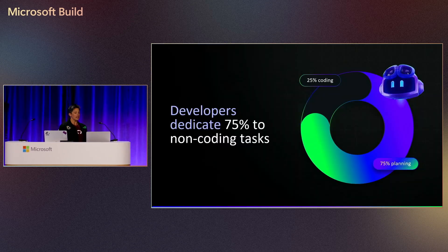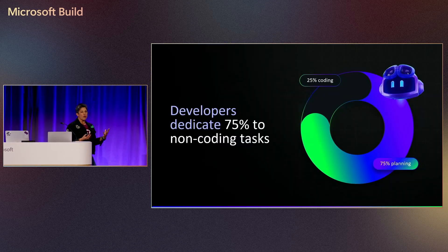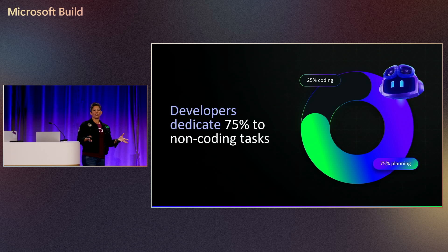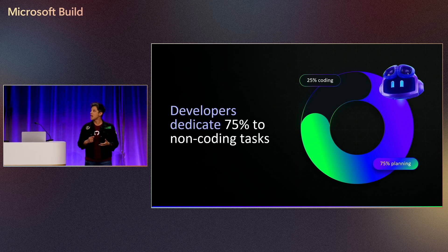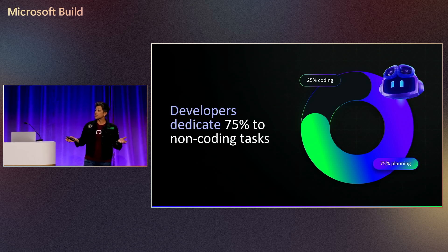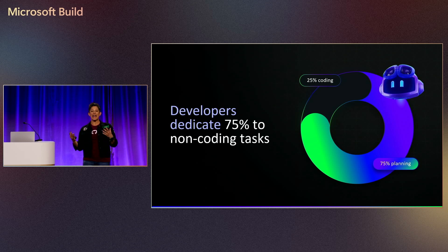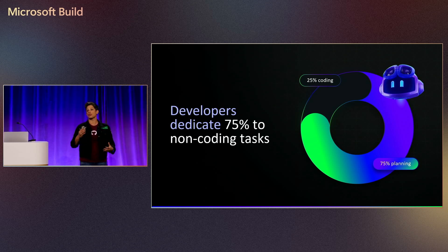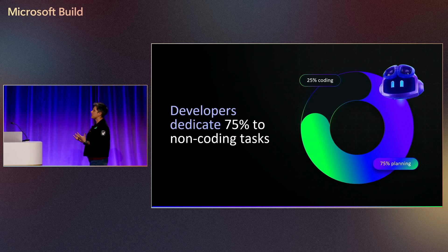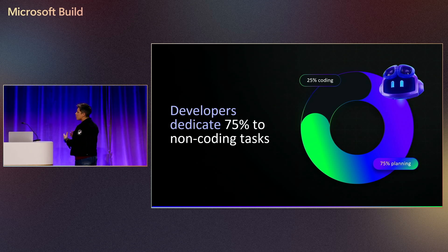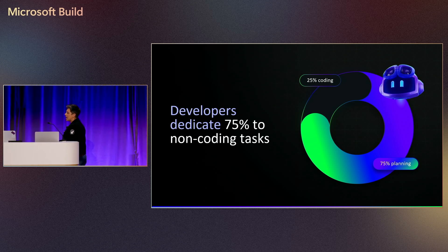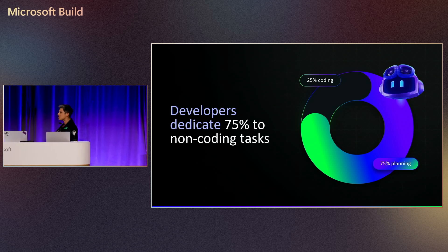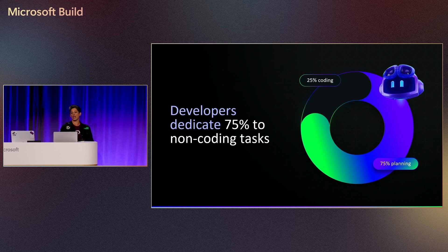The first thing I want to talk about is life as a developer. When I started writing code a long time ago — before some of you were born — I thought I was going to get to write code for 8 to 12 hours a day. As a developer, I have very limited time. I'm waiting on access to resources, waiting on others, trying to get access to the code base. We're very conscious of that at GitHub, so we need to maximize our time.